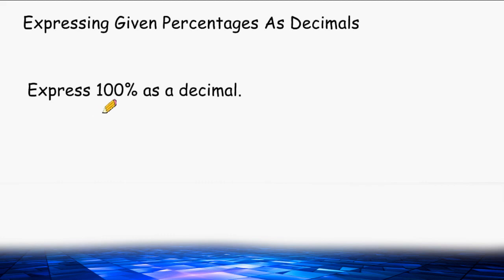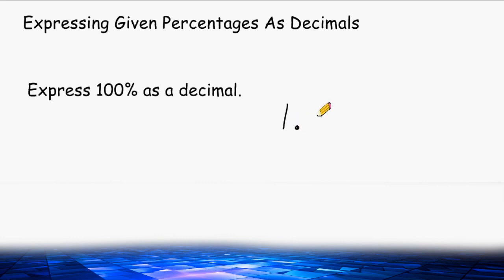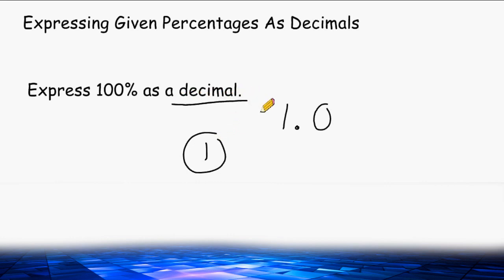With 100%, we should understand that 100% means the whole thing — exactly one whole. So we write 100% as just 1. It says express it as a decimal, so 1 is exactly 1.0. Writing 1.0 in simplest form is just 1. Sometimes when asked to express something as a decimal, you end up getting rid of the decimal if you have a whole number.